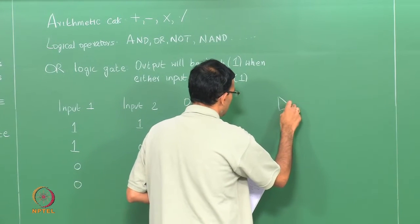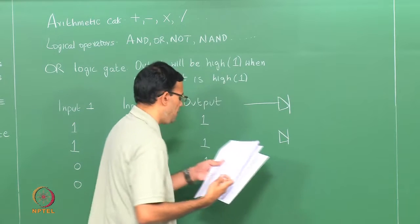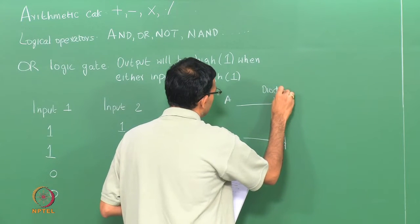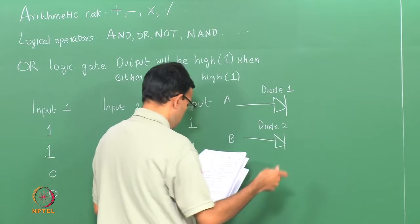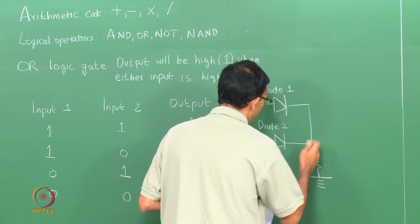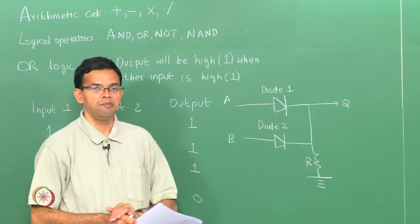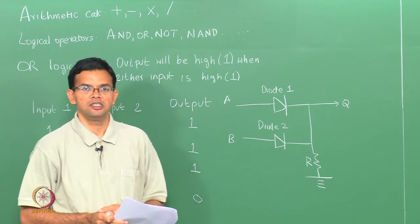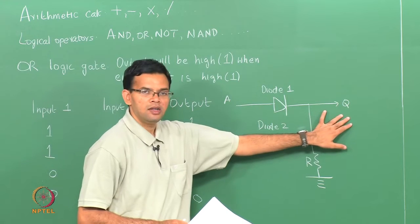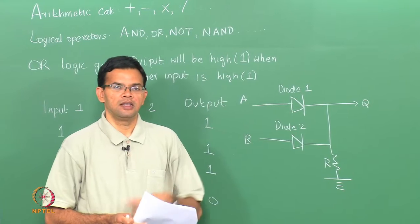A diode is nothing but a p-n junction and last class we saw how we can fabricate these p-n junctions. I have two diodes and two inputs A and B. Diode 1 and diode 2 are both connected together, and there is an external resistor R to modulate the current in the circuit, then you measure the output Q. If either A or B are high, meaning the diode is in forward bias conditions, you will be able to measure a voltage drop across Q. Your output is 0 only when both A and B are turned off, which is a reverse bias condition with no current.